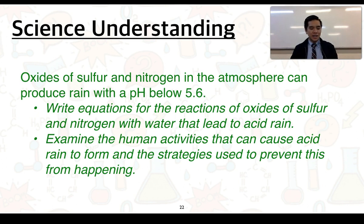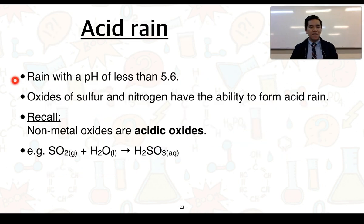The second point is something we will get you to consider as an investigation — looking at different activities that can cause acid rain and strategies used to prevent it from happening. If acidic rain has a pH between 5.6 and 7, then anything less than 5.6 we can classify as acid rain.